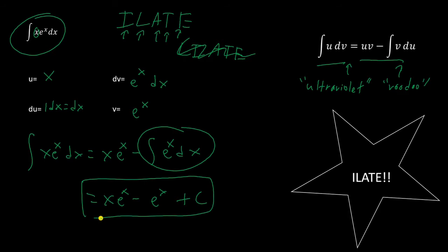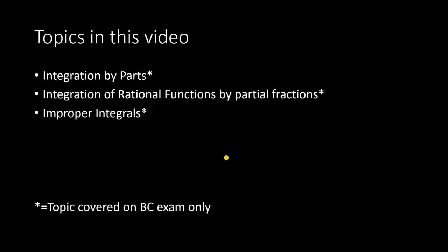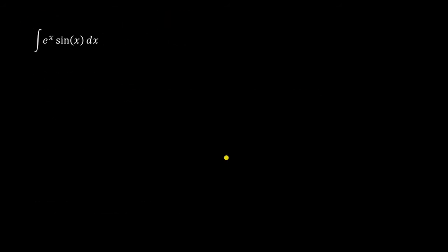That was the simplest type of question you might be asked. Sometimes the v du part would be another product and you have to use integration by parts on that again. So something special that might happen is if you have an exponential function being multiplied by a repeating function, like sine or cosine.